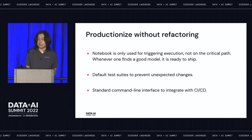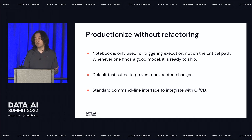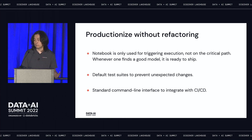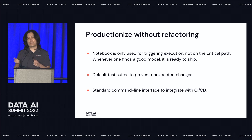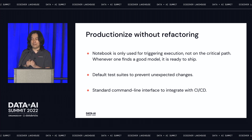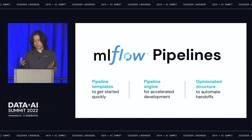For productionization handoff, you don't need to do refactoring. If you follow this opinionated workflow, whenever you find a good model, it is ready to ship to production. You can send a PR and get it reviewed. We also offer default test steps to help you check schema changes and whether your pipeline runs end-to-end. Users don't need to implement those tests by themselves. We also offer standard command line interfaces to integrate with CI/CD — when you hand over a project to production engineers, you don't negotiate what command line to trigger or what parameters to run, because it's all standardized by MLflow pipelines. That's MLflow pipelines — three solutions to address the three major problems in MLOps.